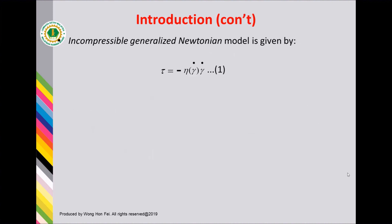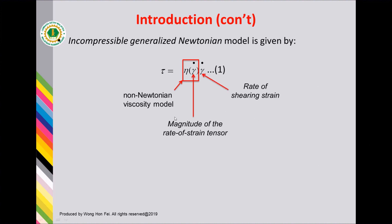The incompressible Generalized Newtonian model is given by equation 1. In order to make this presentation simpler, I will ignore the negative sign here. This is called the non-Newtonian viscosity model. The gamma-dot on the left-hand side is called the magnitude of the rate of strain tensor, and the gamma-dot on the right-hand side is called the rate of strain tensor. These two gamma-dots are different and their calculations are also different.